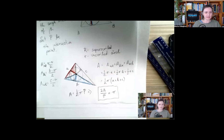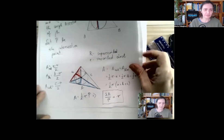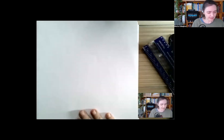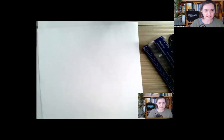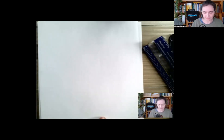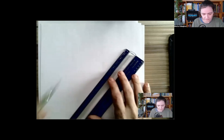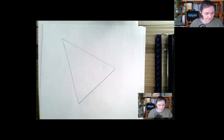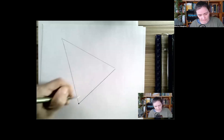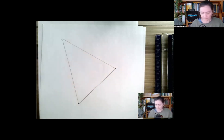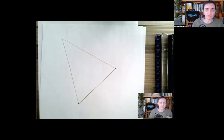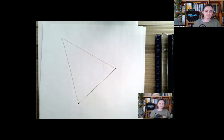If the triangle is neither right nor isosceles the area isn't as easy to determine, but if you know the area and perimeter, the formula works for any triangle. Now let's construct this circle. We're going to intersect two angle bisectors — for this angle bisector we already have one point at the intersection of the two rays.